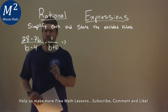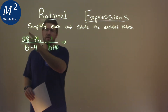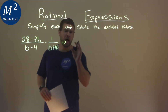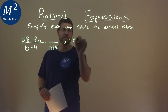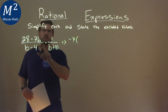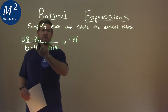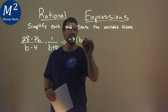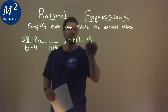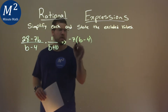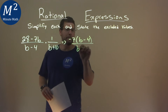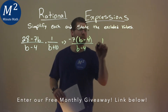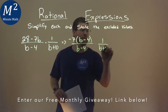Let's go simplify first. This numerator, 28 minus 7b — I'm going to pull out a negative 7. It's going to be kind of tricky. If I pull out a negative 7, I'm left with a positive b from here and a negative 4 from the 28. Put that over a b minus 4 here, and then we keep the rest: 1 over b plus 10.